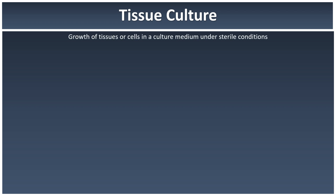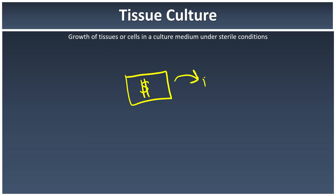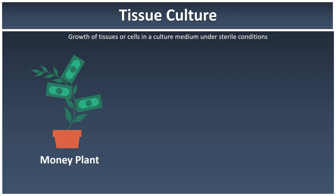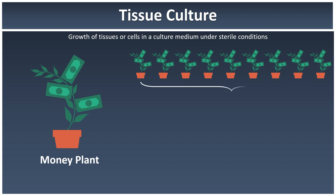Tissue culture is basically the growth of tissue or cells in a culture medium under sterilized conditions. For example, instead of duplicating money (which is illegal), I think of cloning a money plant, since cloning money plants is not illegal at all. I can clone as many money plants as I like by knowing the method of tissue cultures.